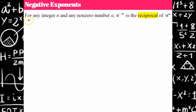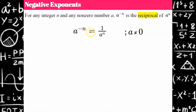For negative exponents: for any integer n and any non-zero number a, a to the negative n is the reciprocal of a to the n. So a to the negative n is equivalent to one over a to the n, and the exponent becomes positive. A negative exponent is really representing a fraction. And a cannot equal zero because we'd have zero in our denominator, which would be undefined — we cannot divide by zero.